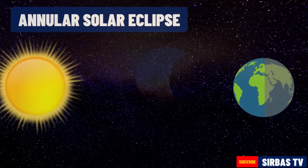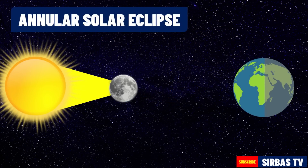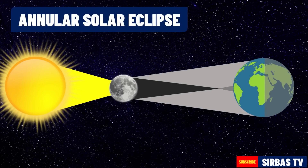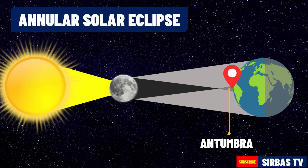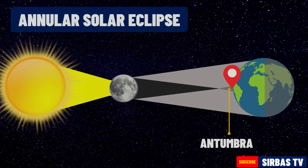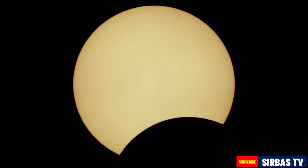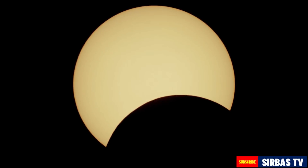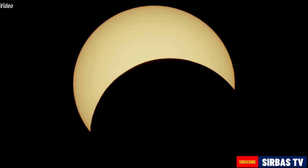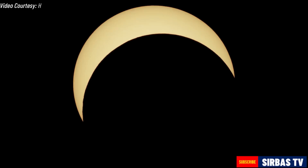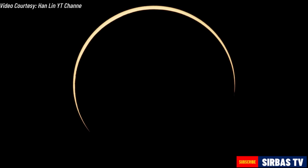An annular solar eclipse happens when the Moon is farthest from Earth. This creates another type of shadow called an antumbra. Antumbra exists if the light source has a larger diameter than the opaque object. If the observer is on the antumbra, he will observe an annular solar eclipse. Because the Moon is farther away from Earth, it seems smaller and does not block the entire view of the Sun. In this case, the Sun seems to be a very bright ring surrounding the dark disk of the Moon, which is called an annulus.